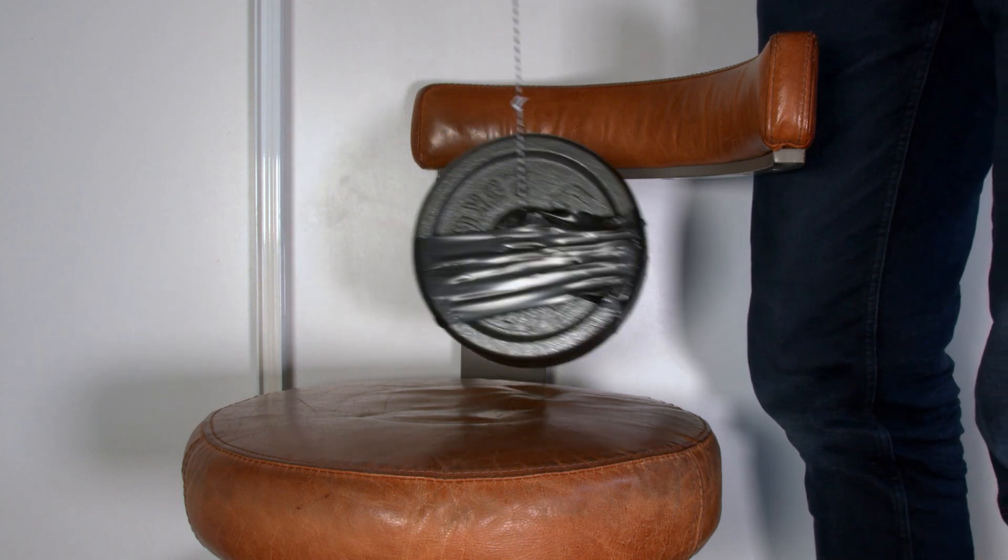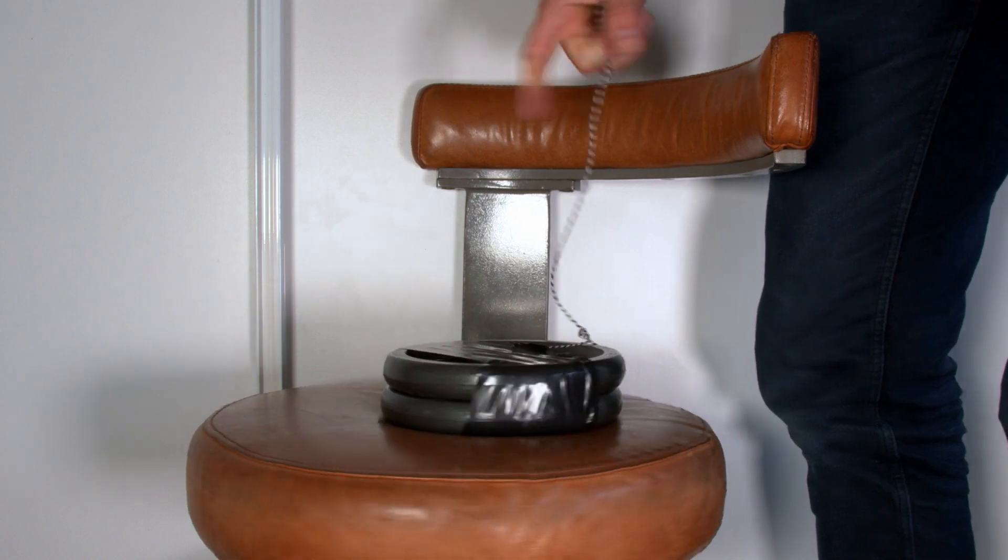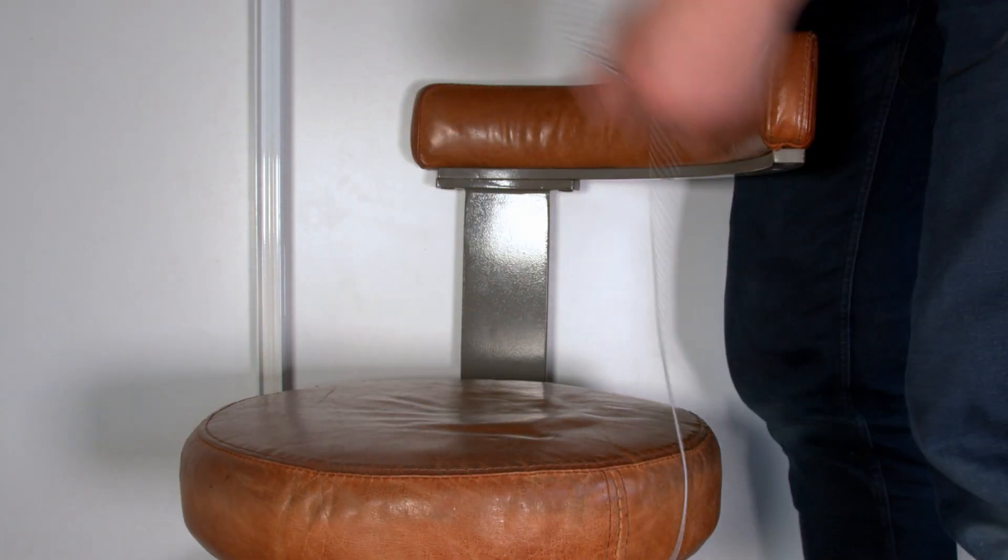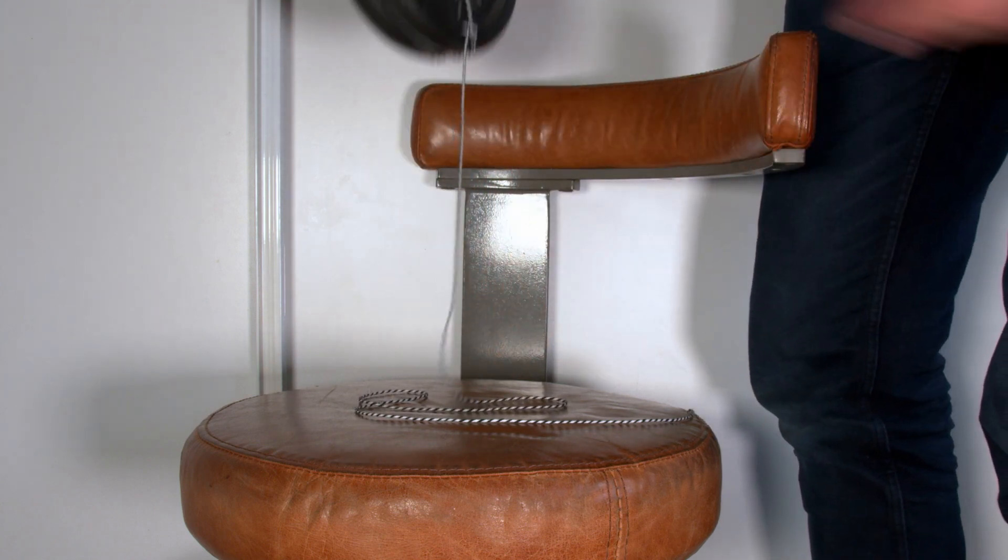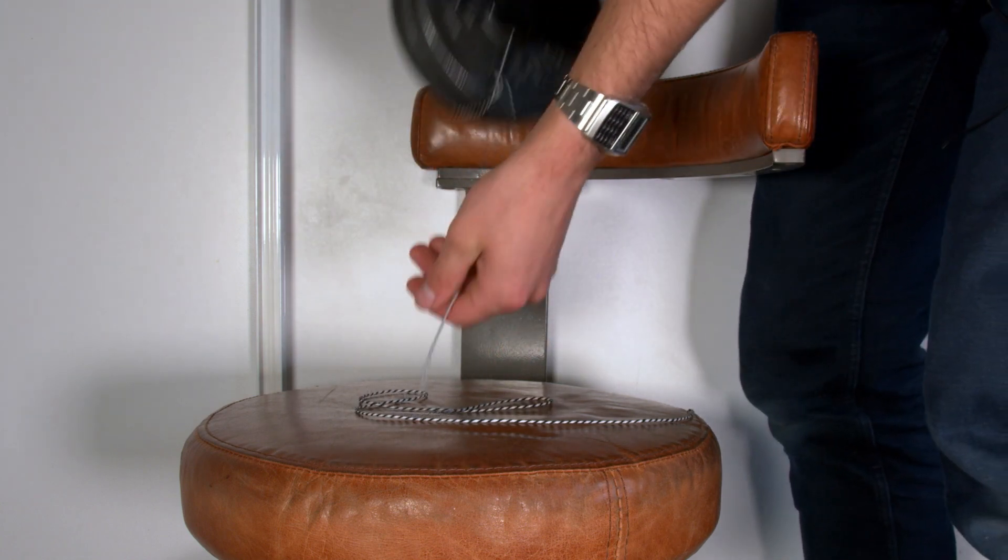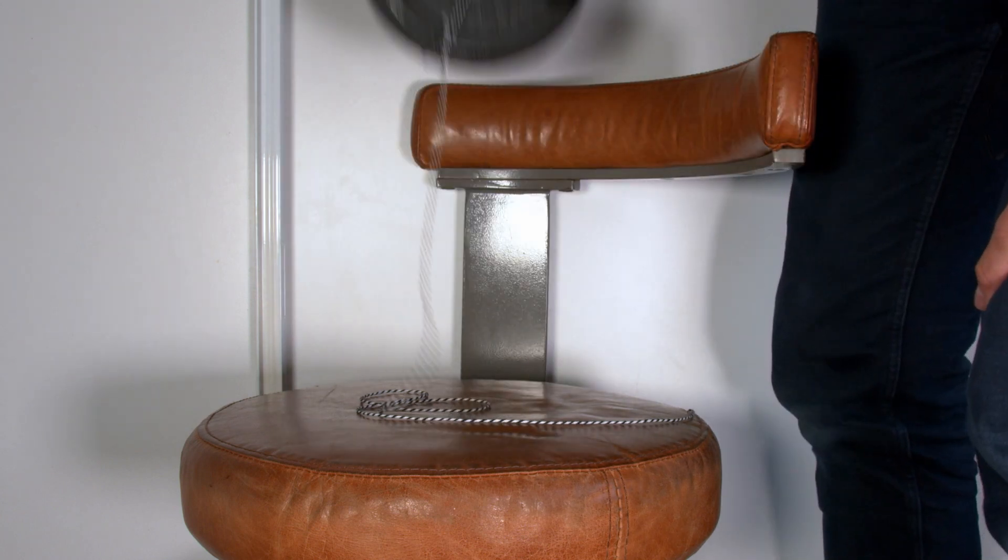But what happens if I wanted to try and support the five kilo weight on the string? Let's give that a shot. So I'll put the string there, and I'll try to support it. Now I'm trying to let go, but as you can see, the string just crumples underneath.